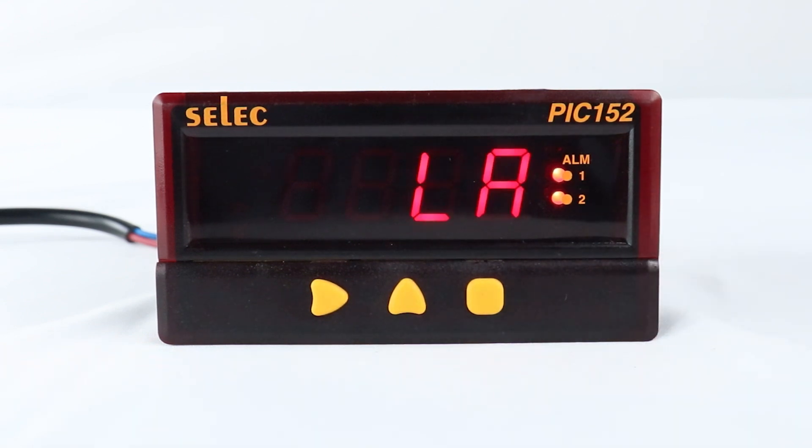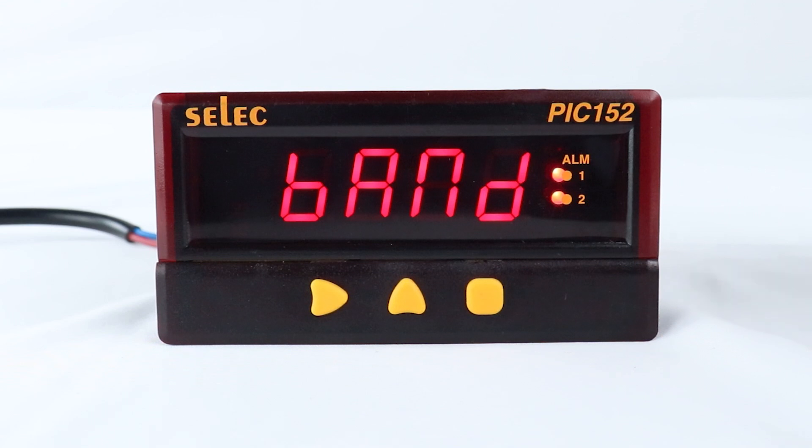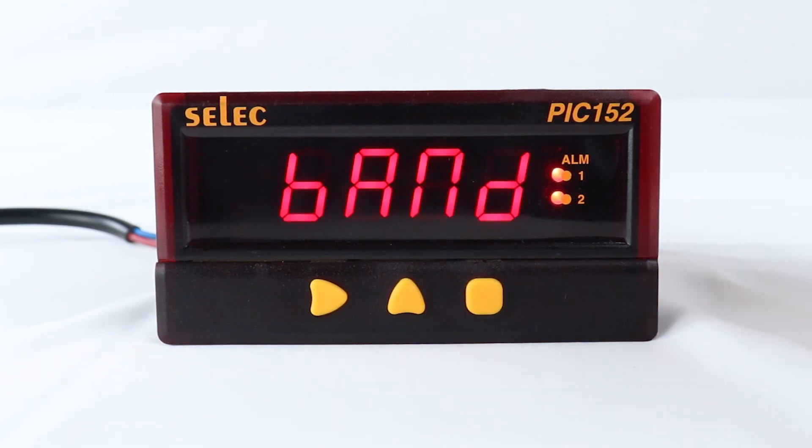Low alarm, it turns on when process value falls below a preset value. Band alarm turns on when process value falls or rises above preset range.